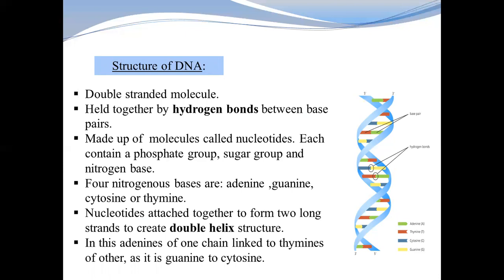There are four nitrogen bases: Adenine, Guanine, Cytosine, and Thymine. Adenine and Thymine are double-bonded — we call these purines. Cytosine and Guanine are triple-bonded — we call these pyrimidines.